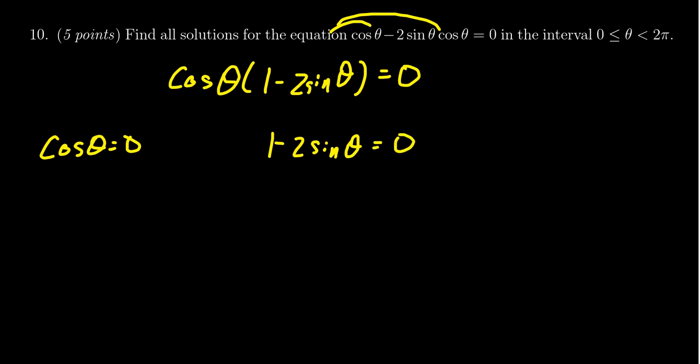Solving these, the first one's basically already there: cos(θ) = 0. When does cosine equal 0? That happens at the top and bottom of the unit circle. So we get θ = π/2 and 3π/2. We only have to find solutions up to 2π, so I don't need anything else.